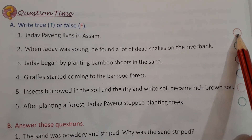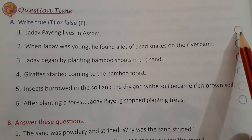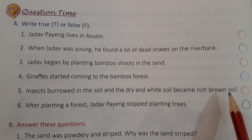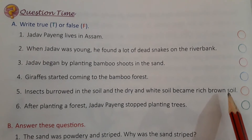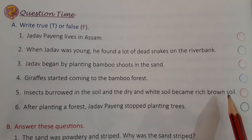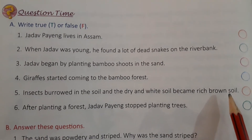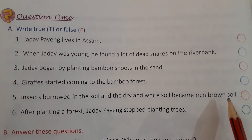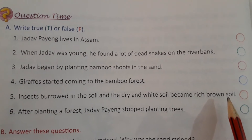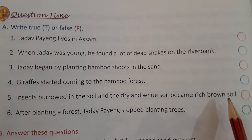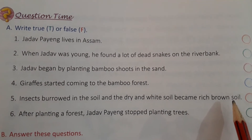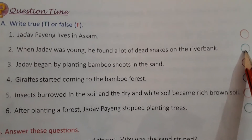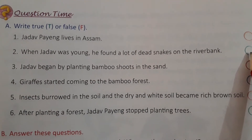Second: When Jadav was young, he found a lot of dead snakes on the river bank. तो Jadav जी जब young थे, जब वो 16 साल के थे, तब उनको नदी के किनारे बहुत सारे मरे हुए साँप दिखे थे. तो आप यहाँ पर लिखोगे True. T for true.